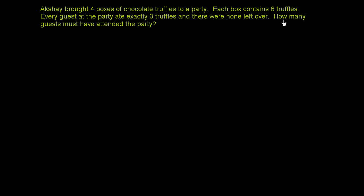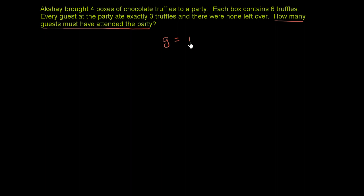So we're trying to figure out how many guests must have attended the party. Let's define a letter to represent that. Let's say G — G for guests — is equal to the number of guests at the party.